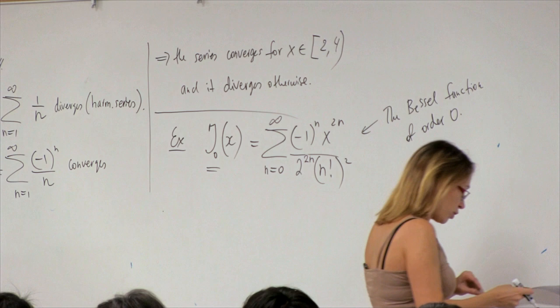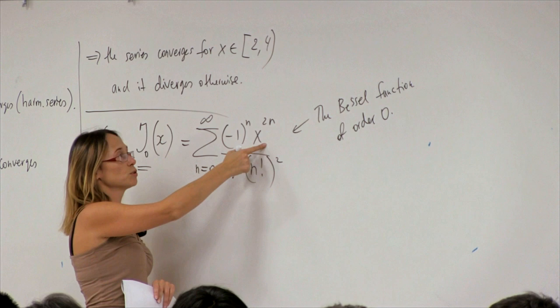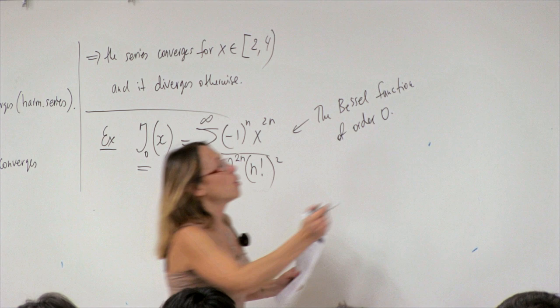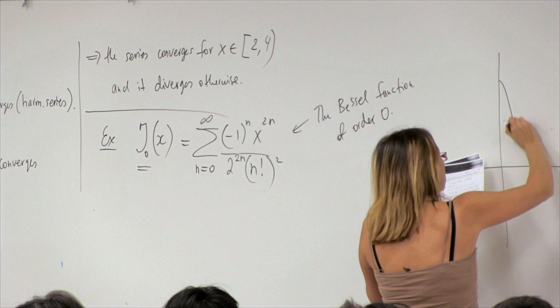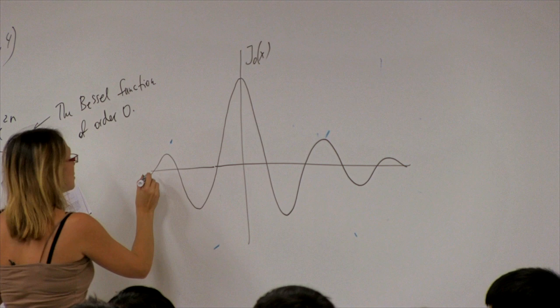We can stick any value of x — 0.1, 0.2, 1, 2, 3 — into a computer, calculate a hundred terms, and get a very good idea of what this function does. For positive x, it looks like a wave with decaying amplitude, and it's symmetric. This is the Bessel function.